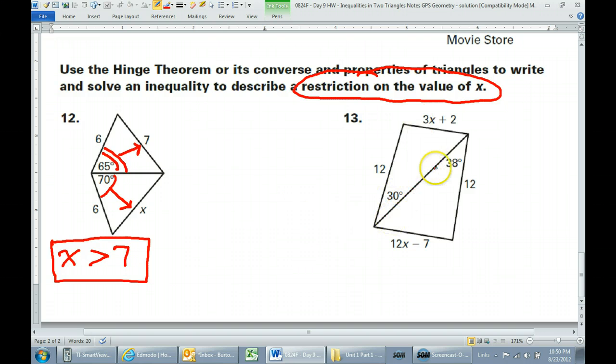Similarly, looking at this situation, again, notice the 12 and the 12. Those are congruent. That's important. And of course, the shared side here in the middle is congruent. So we do have two pairs of congruent sides.